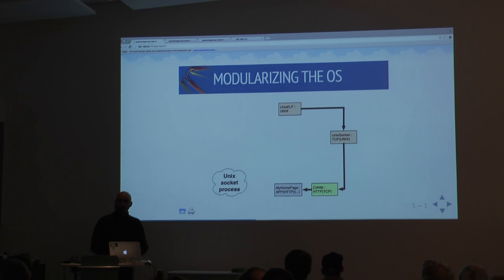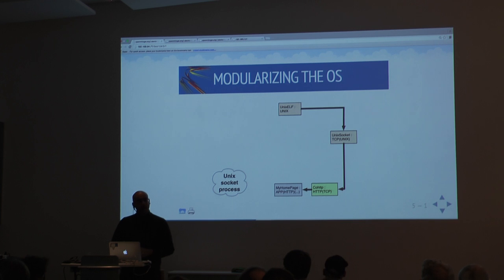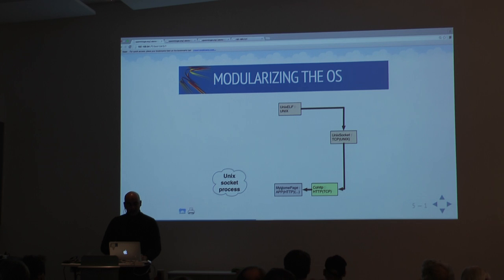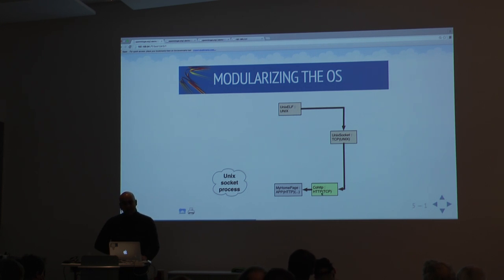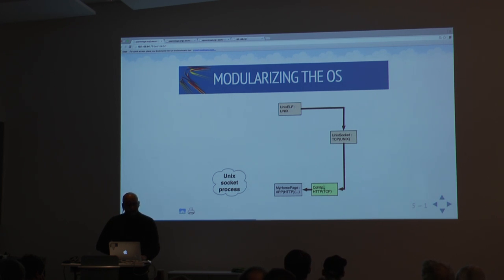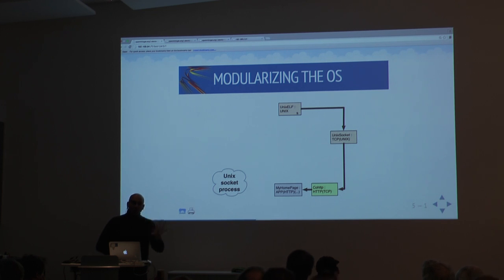Let me give you an example using the website I showed you. First, we define a homepage, which is an application. The application depends on an HTTP stack. That HTTP stack itself depends on a TCP stack because it has network traffic. When running in Unix, TCP is provided by Unix sockets, which depends on the Unix kernel. This is how a normal application is built — whether it's a Haskell app or an OCaml app, it looks no different.